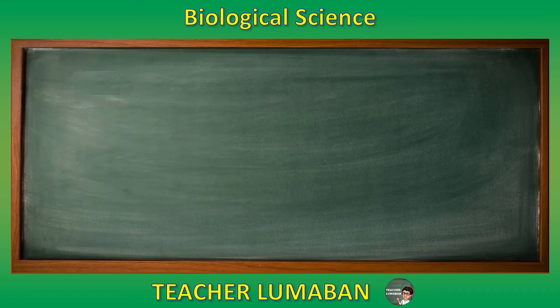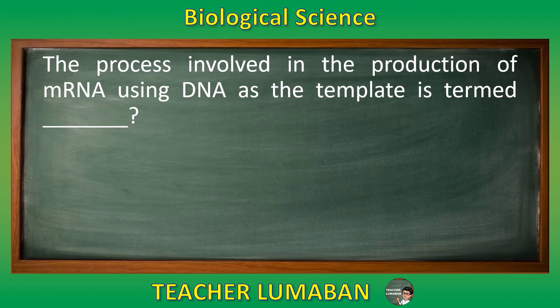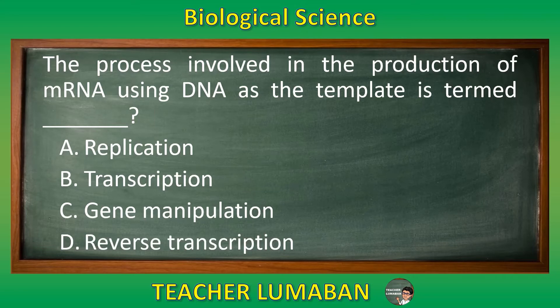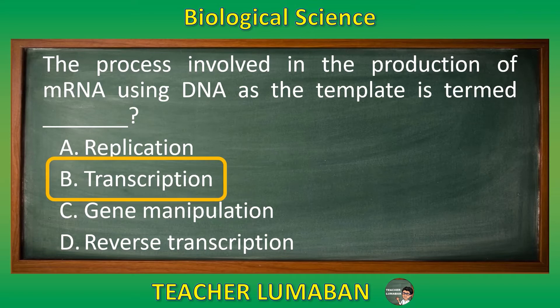The process involved in the production of mRNA using DNA as the template is termed blank. Letter A: replication. Letter B: transcription. Letter C: gene manipulation. Letter D: reverse transcription. Choose the suitable answer based on the given choices in 5 seconds. 5, 4, 3, 2, 1. The correct answer is Letter B, transcription. The process involved in the production of mRNA using DNA as the template is termed transcription.